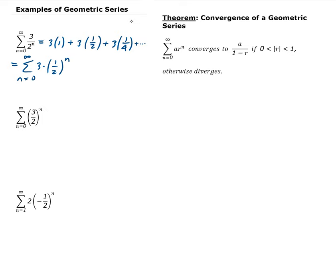The reason we wrote it this way is so we can easily identify what a and r are. Here, a is the constant term, and r is the ratio — each term is being multiplied by 1 half. So a is 3 and r is equal to 1 half.